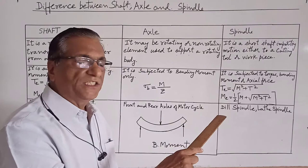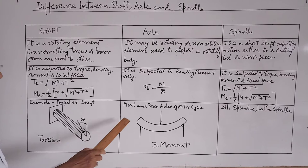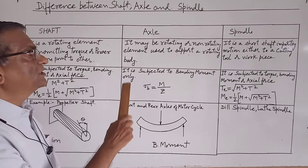Now this is the figure of the shaft subjected for torsion. This is the figure of the axle subjected for pure bending. So this is all about the difference between the shaft, axle, and spindles.